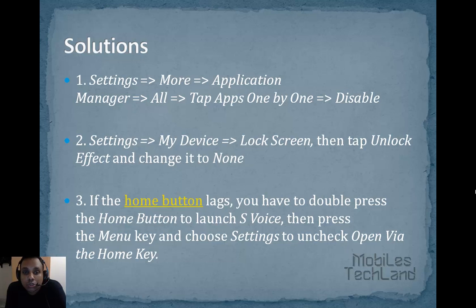Number two: go to Settings, My Device, Lock Screen, then tap Unlock Effect and change it to None.